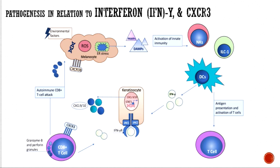This is the pathogenesis we have been discussing since yesterday. When there is any environmental insult, there is a release of AMPs and DAMPs that prime immune cells to secrete more IFN-gamma, which then stimulates keratinocytes to secrete CXCL9, CXCL10, and other ligands. These bind to the CXCR3 receptor expressed on melanocytes as well as many lymphocytes, creating a pro-inflammatory niche in the skin that may be responsible for melanocyte destruction.